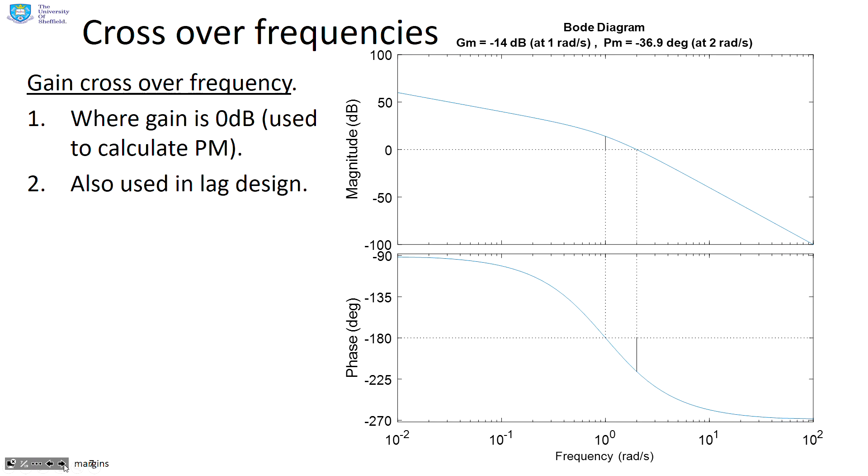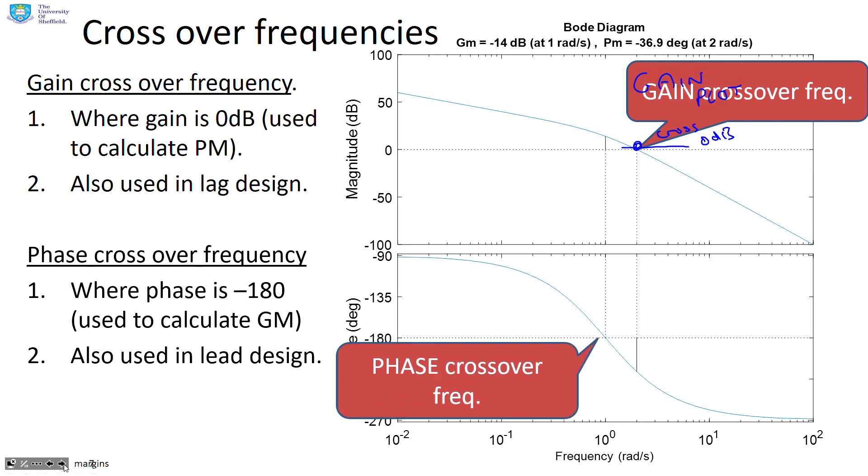We also need to understand this concept of crossover frequencies. The gain crossover frequency comes from the gain plot. Where does the gain cross 0 decibels? Similarly, we've got the phase crossover frequency. This is where the phase diagram crosses the minus 180 degree line. Those two frequencies are very, very important in Bode plots. In MATLAB, it gives you these vertical lines which show you exactly where those frequencies are. If you want those vertical lines, you need to use the command margin G.